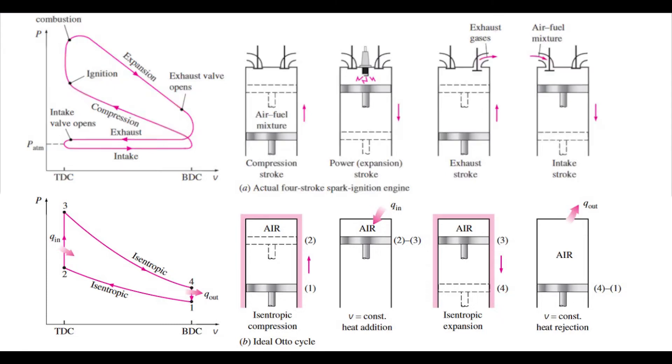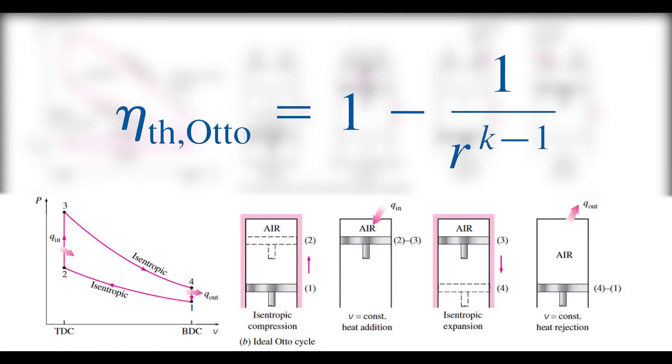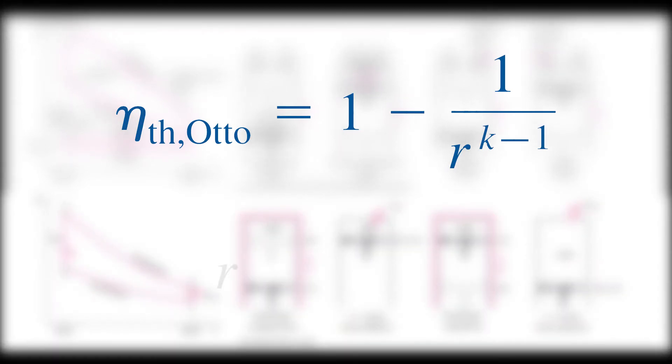Thermal efficiency of an Otto cycle is proved to be in which R is the compression ratio and it is defined as volume of BDC divided by volume of TDC. According to this relation, larger values of R and K result in higher thermal efficiencies.